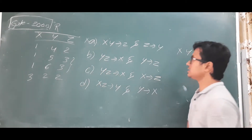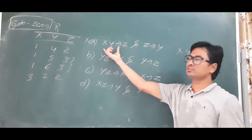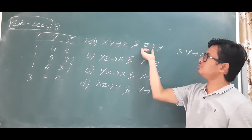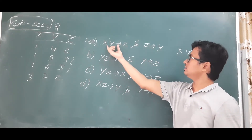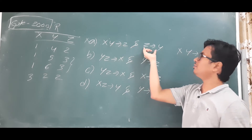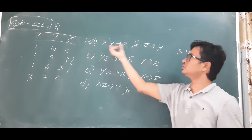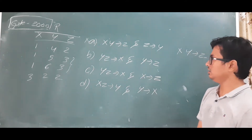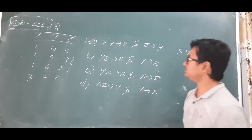So option A says both XY→Z and Z→Y are valid, but while XY→Z is valid, Z→Y is not. Therefore option A is not the correct answer.